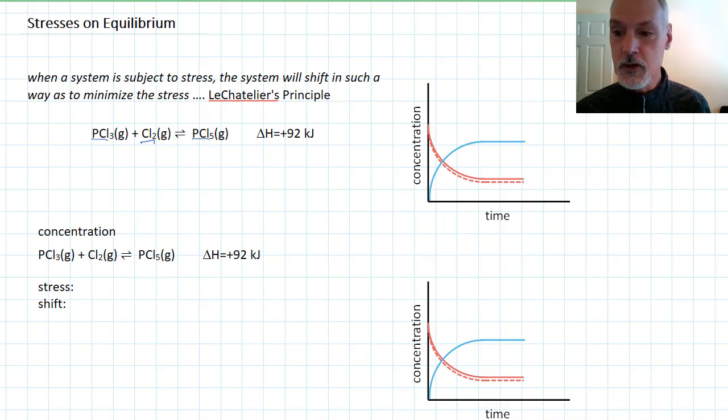Here we can see the concentrations of the various species. So initially there was no product present, and then I've reached equilibrium at this time and beyond. This blue line represents the concentration of my PCl5. The red lines represent my two reactants. So let's say the solid line is the PCl3 and the dotted line is the chlorine.